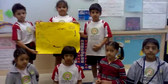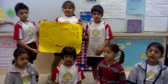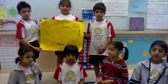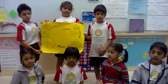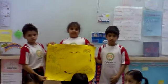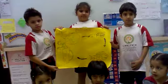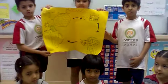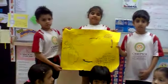These are the children of Grade 2A. The topic given to them was the water cycle, and they have made a flow chart. Now they are going to talk about it.